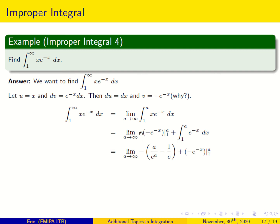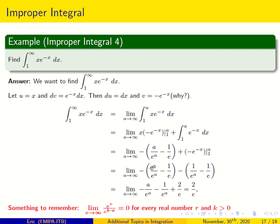We get x times (minus e to the minus x) evaluated at 1 and a, plus the integral of e to the minus x dx. The integral of e to the minus x is minus e to the minus x. Substituting: a over e to the a minus 1 over e, then plus the evaluation of minus e to the minus x at a and 1, giving 1 over e to the a minus 1 over e.